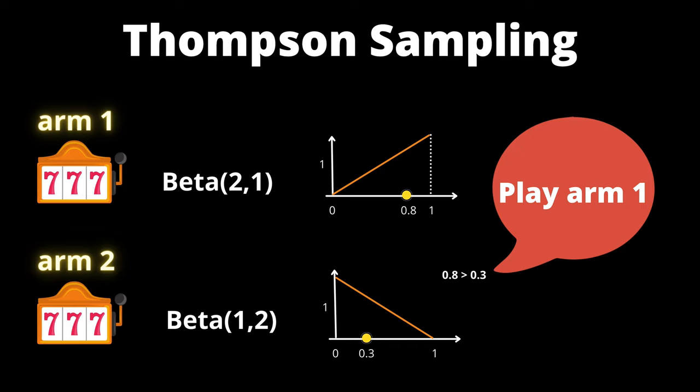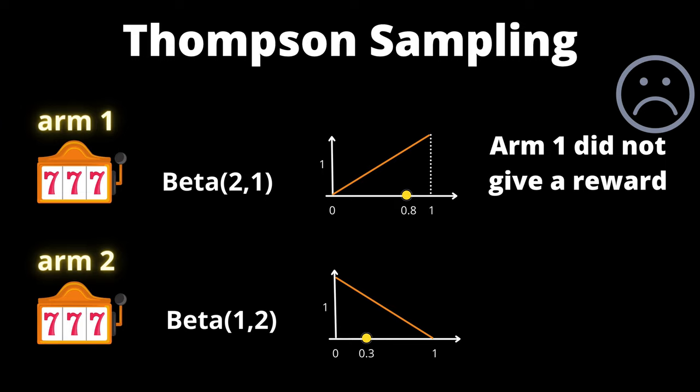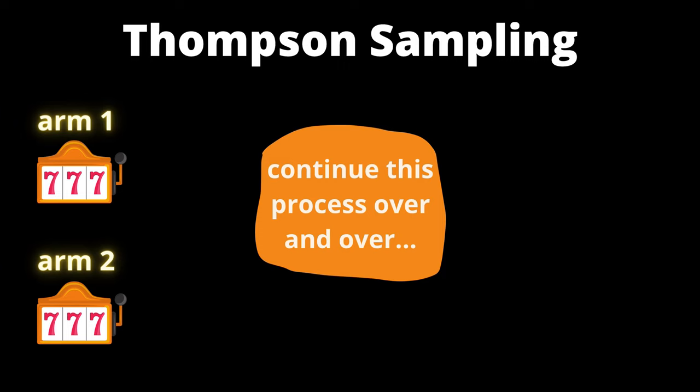Let's say this time arm 1 did not give us a reward. Then the posterior distribution for arm 1 updates to beta 2 2. And we continue this whole process over and over again.